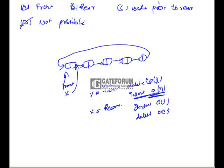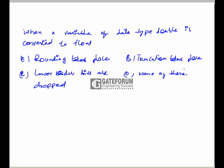When a variable of data type double is converted to float: option A, rounding takes place; option B, truncation takes place; option C, lower order bits are dropped; option D, none of these. So whenever double is converted to float, here rounding takes place. So your correct option is option A.